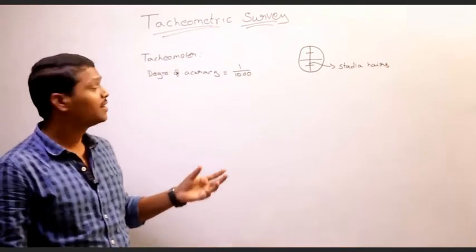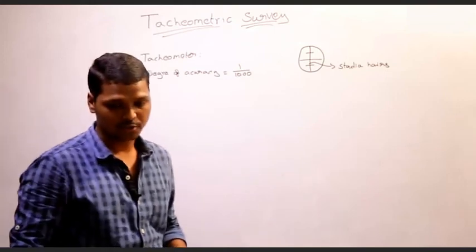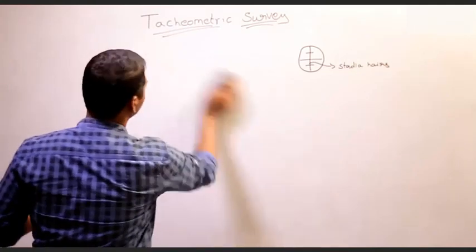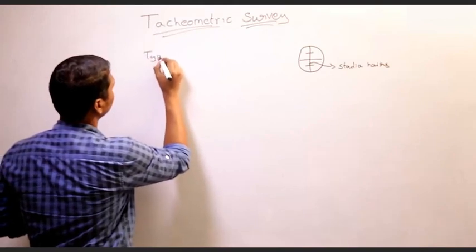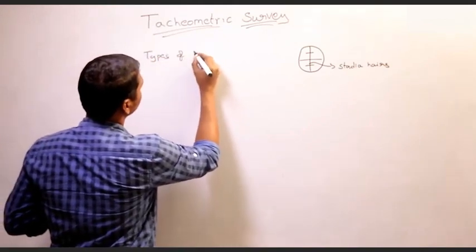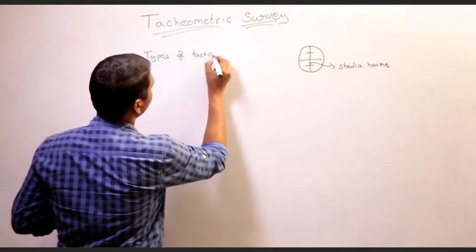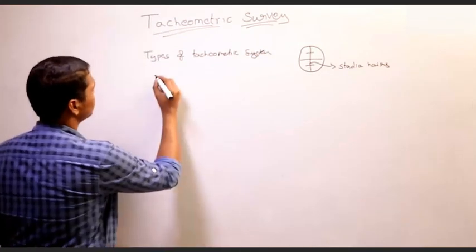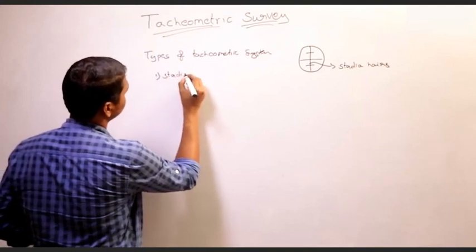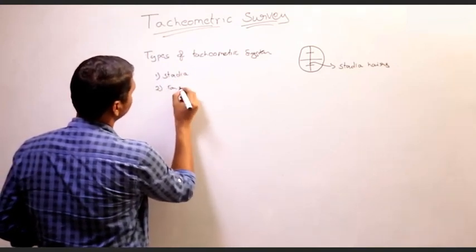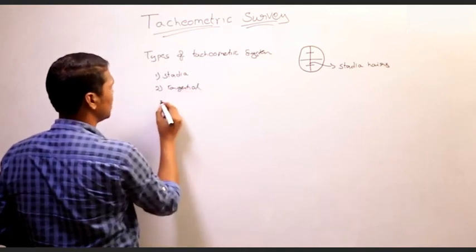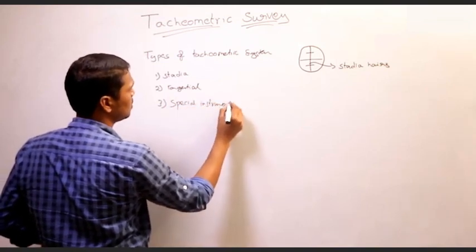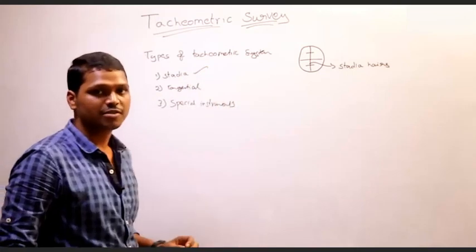There are different tachymetric systems used to conduct a tachymetric survey. There are 3 types of tachymetric systems: the first is the stadia system, the second is the tangential system, and the third involves special instruments. We mostly use the stadia system of tachymetric survey.